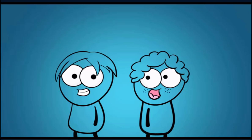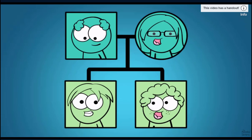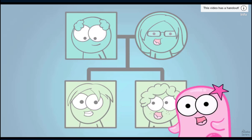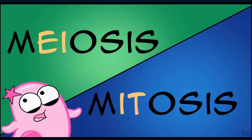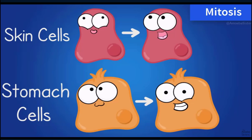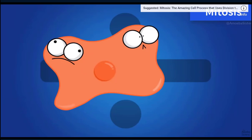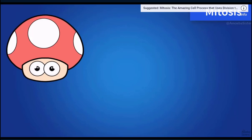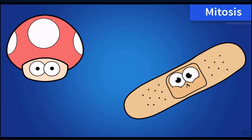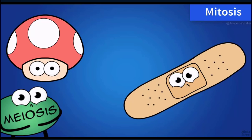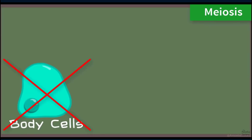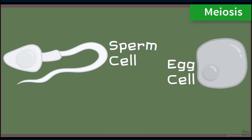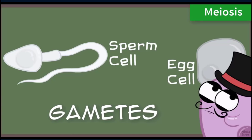Have you ever wondered how two siblings can have the same mom and dad and still look so different? Today we're going to talk about meiosis — the process that makes that possible. Not to be confused with mitosis, which sounds unfortunately similar. Mitosis makes identical body cells like skin and stomach cells — it's important for growth and repair of damage or to replace worn-out cells. But meiosis is different — it contributes to genetic variety.